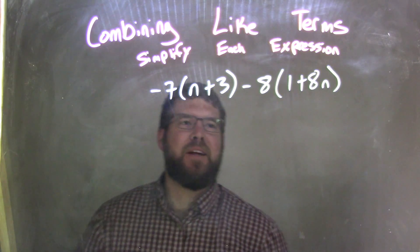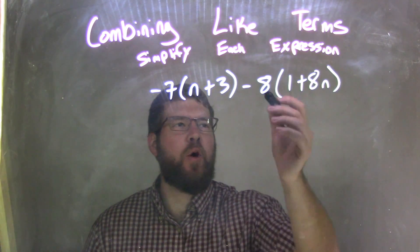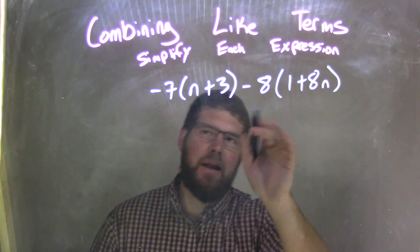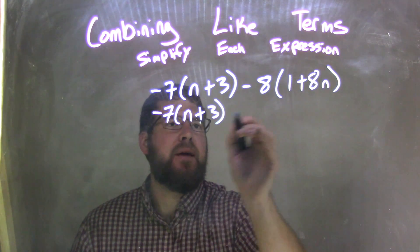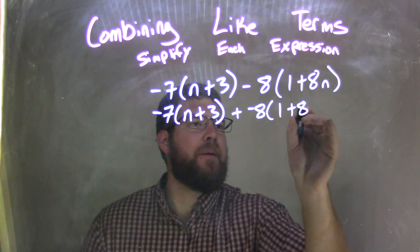The first step I'm going to do is make that minus into plus negative, because when I start distributing, I prefer adding a negative rather than dealing with subtraction. So I have negative 7 times (n plus 3) plus negative 8 times (1 plus 8n).